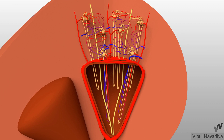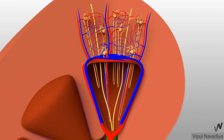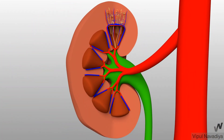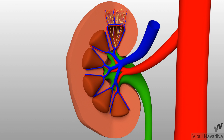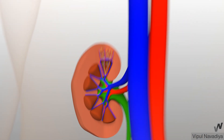Venous drainage is the same for both capillary networks. Both capillaries drain into the interlobular vein. Interlobular veins drain into the arcuate vein, then comes the interlobar vein, lobar vein, segmental vein, and renal vein — all running parallel to their respective arteries. The renal vein drains into the inferior vena cava, which finally empties into the heart.